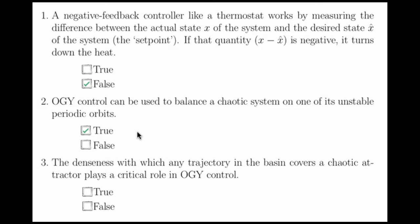Question 3 states that the denseness with which any trajectory in the basin covers a chaotic attractor plays a critical role in OGY control, and this is also true.